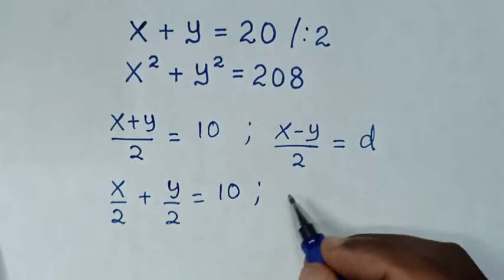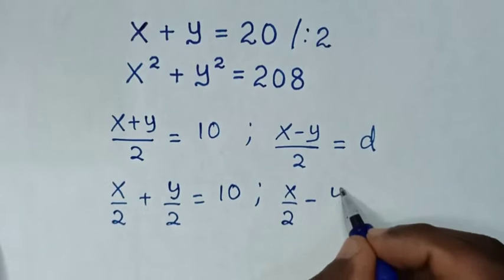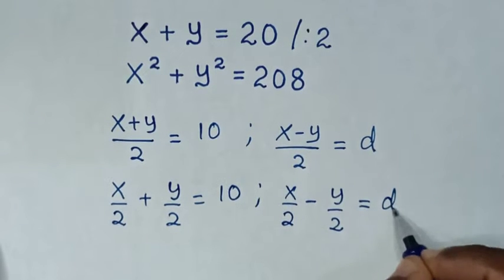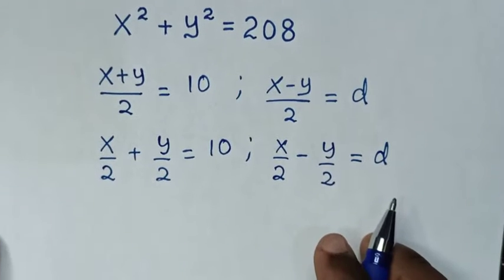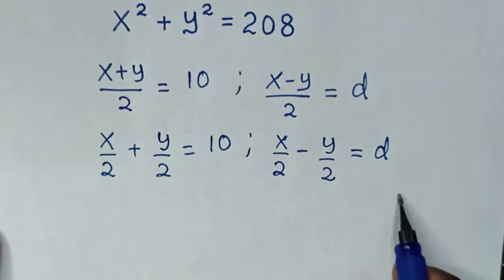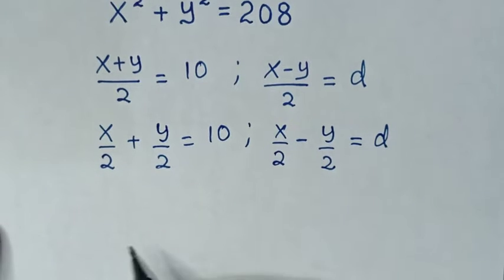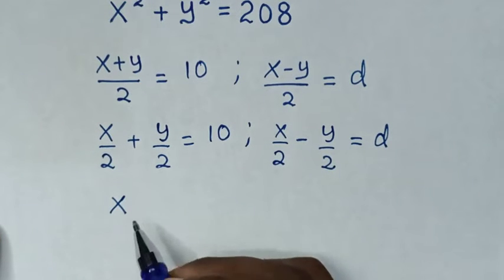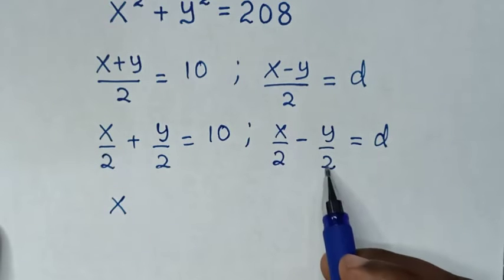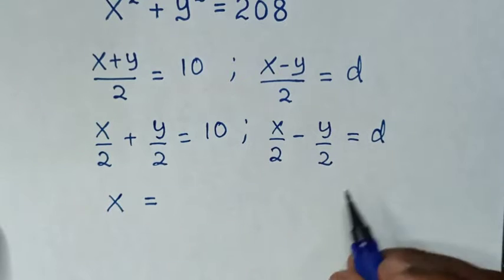Then for the second equation it will be x over 2 minus y over 2 is equal to d. Then we take the first equation and add it to the second equation. So x over 2 plus x over 2 is x, and plus y over 2 minus y over 2 is 0. So it will be equal to 10 plus d.